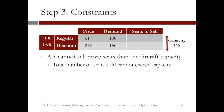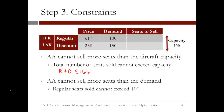The third step is to define the constraints, or limits, of our decisions. One constraint is that American Airlines can't sell more seats than the aircraft capacity, which is 166 seats. So the total number of seats sold, R plus D, has to be less than or equal to 166. Additionally, American Airlines shouldn't sell more seats than the demand for each type of seat. So the regular seats R shouldn't exceed 100, meaning R should be less than or equal to 100. And the discount seats D can't exceed 150, so D should be less than or equal to 150.